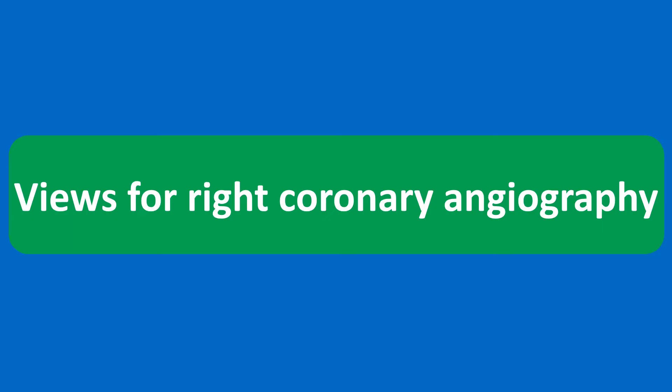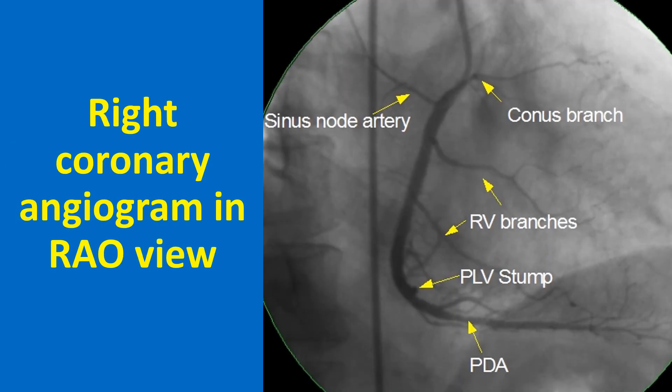Moving on to views for the right coronary artery: the RAO view shows the conus branch and sinus node artery in opposite directions. Right ventricular branches and the posterior descending artery (PDA) are seen well, with multiple septal branches arising from the PDA. The PDA has a mild lesion in its proximal portion. In the illustrated angiogram, the posterior left ventricular branch (PLV) is occluded and only a stump is seen. The atrioventricular nodal artery usually originates near the bifurcation of the right coronary artery into PDA and PLV.